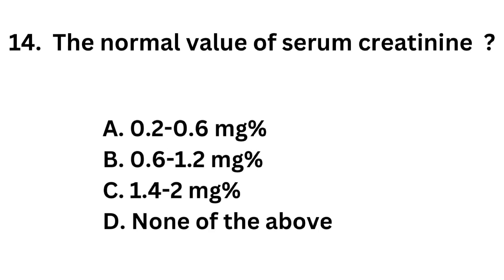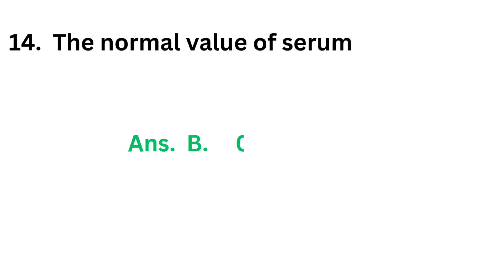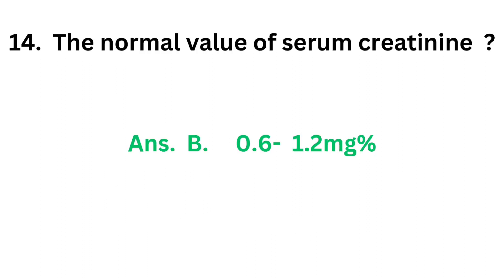Question number 14. The normal value of serum creatinine: Option A: 0.2 to 0.6 mg%. Option B: 0.6 to 1.2 mg%. Option C: 1.4 to 2 mg%. Option D: None of the above. The correct answer is option B, 0.6 to 1.2 mg%. That is the normal value of serum creatinine.